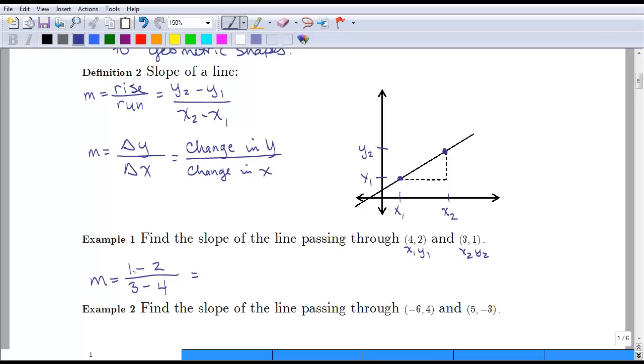1 minus 2 is negative 1, and 3 minus 4 is negative 1, negative 1 divided by negative 1. We always want to reduce this fraction if possible. It's just going to give us a slope of 1. For every unit we increase on the y-axis, we increase one unit on the x-axis, or there's one unit of rise for every unit of run.